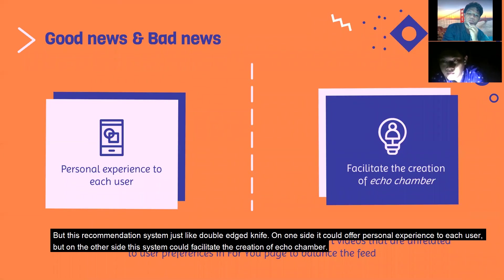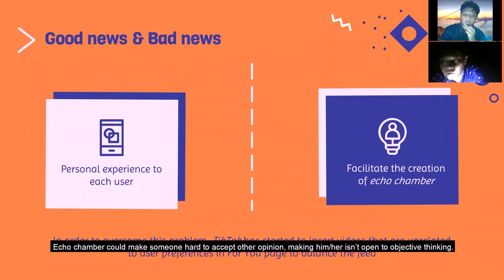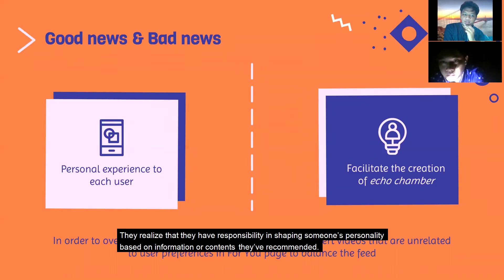However, this recommendation system is like a double-edged knife. On one side it offers a personalized experience to each user, but on the other side it can facilitate the creation of an echo chamber. An echo chamber is a metaphorical situation where someone only obtains information or opinions from one side, in line with their existing desires. This can make someone unwilling to accept other opinions and less open to objective thinking. TikTok has started inserting videos unrelated to user preferences on the For You Page to balance the feed, recognizing their responsibility in shaping someone's perspective.